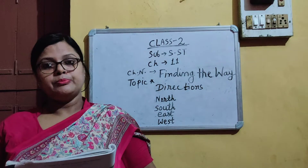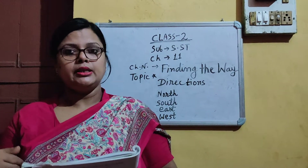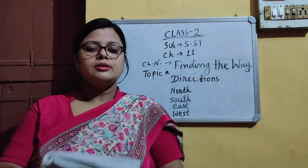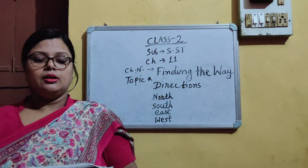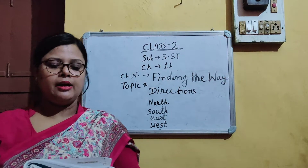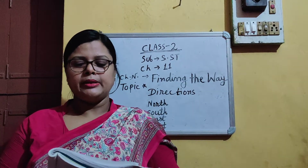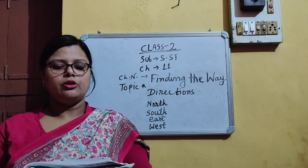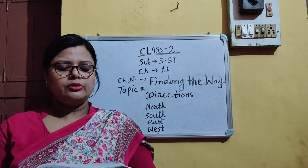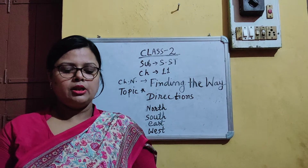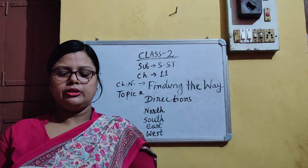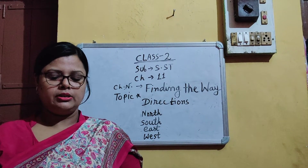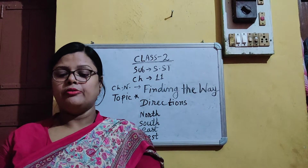There are also four sub-directions. North-east is the direction between north and east. North-west is the direction between north and west. South-west is the direction between south and west.